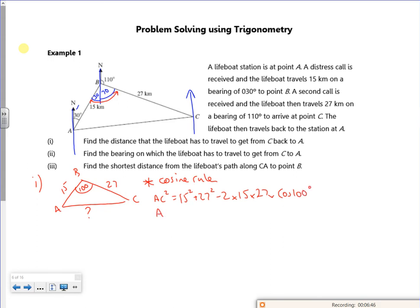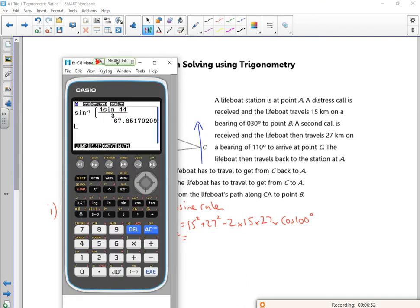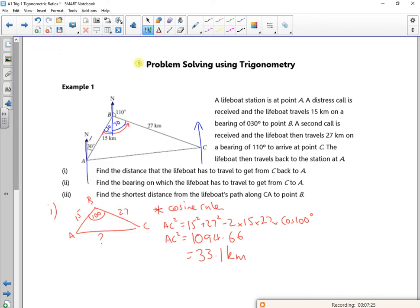So A to C squared is 1094.66. So if I square root it, so shift and square root, shift and add. And it gets me 33.1. 33.1 kilometres. Let's get rid of that in a minute and see. So that's part one done. Part two, so I'm going to put my 33.1 on there now.